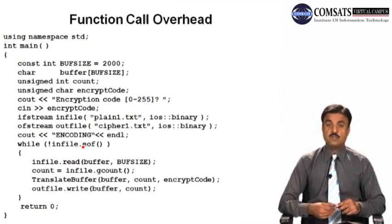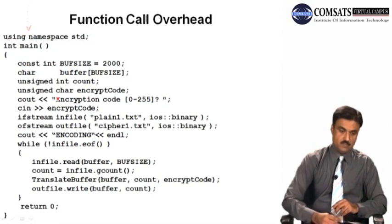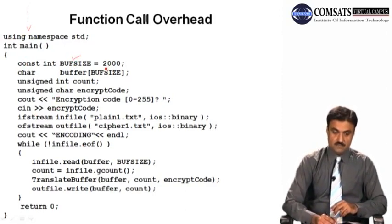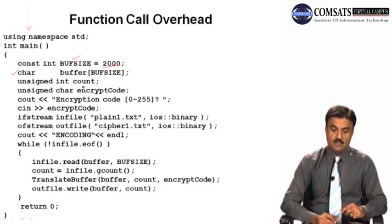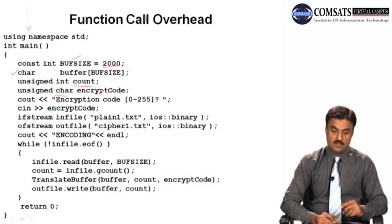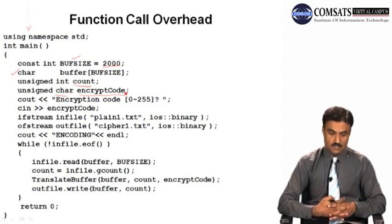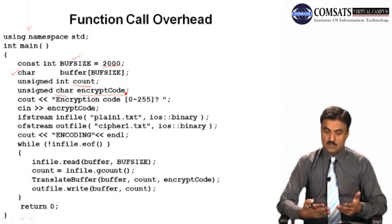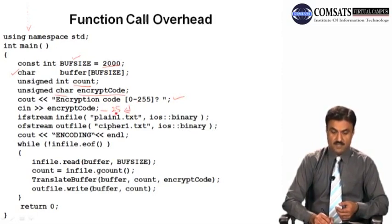Here is the function call overhead example. In the Visual C++ project, we define a buffer of 2000 characters (BUFFER_SIZE = 2000), an unsigned integer count for the total number of values, and an unsigned character for the encrypt code. The program prints a prompt to enter an encrypt code from 0 to 255 — for example, entering 25 stores that value in encrypt_code. We then open two files.